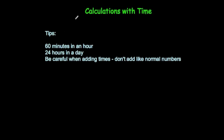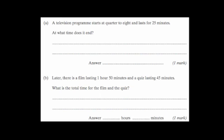In this video we're going to look at calculations involving time. Firstly, there are 60 minutes in an hour, so every time we get to 60 that's going to be another hour. There are 24 hours in a day. Be careful when adding times — don't add them like normal numbers using the column method. It's easier to consider how many minutes it takes to get to the next hour and so on.